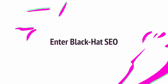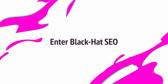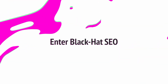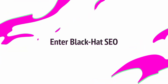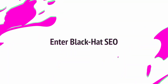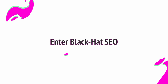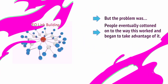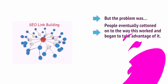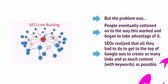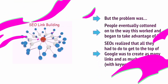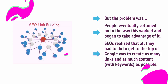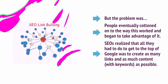This simple algorithm makes a lot of sense in theory and should have helped Google to find content that people were looking for quickly and easily. It would read the content to see which site was most relevant for that term and look at which sites had the most links from other websites. But the problem was, people eventually cottoned on to the way this worked and began to take advantage of it. Search engine optimizers realized that all they had to do to get to the top of Google was to create as many links and as much content as possible.